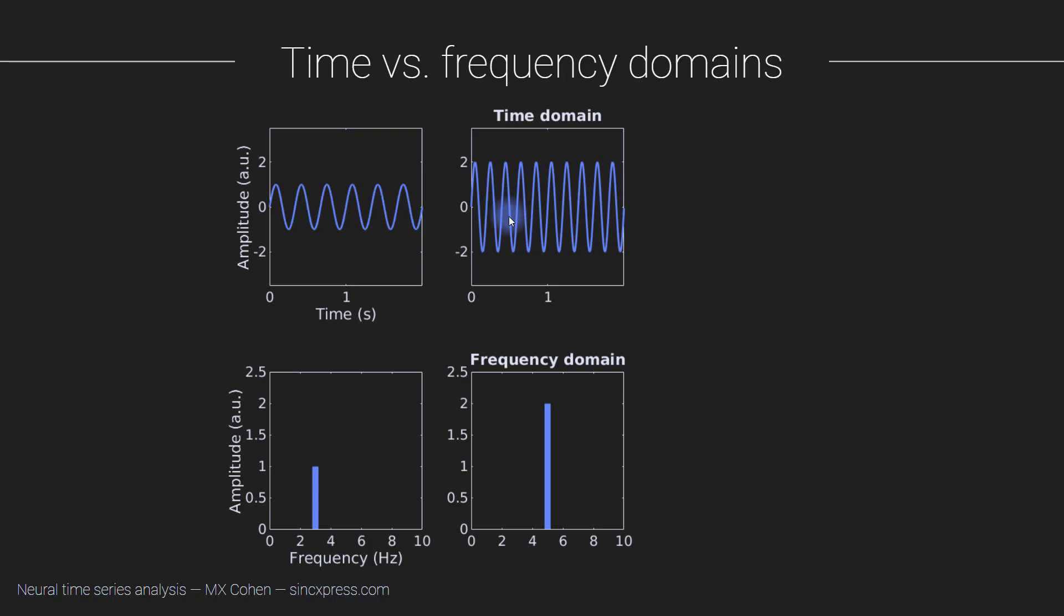Let's do the same procedure for this signal here. We have one, two, three, four, five cycles within a period of one second, and then here we see a bar at five Hertz. This goes up to two, and here we have the troughs at minus two and the peaks at plus two. That's a total distance of four, and half of that is two.